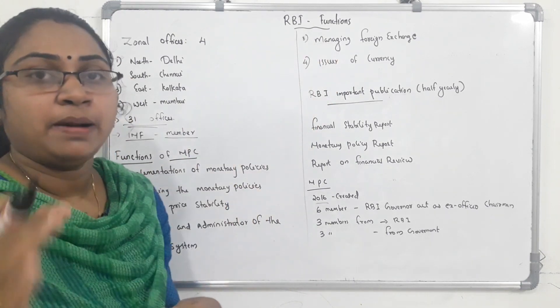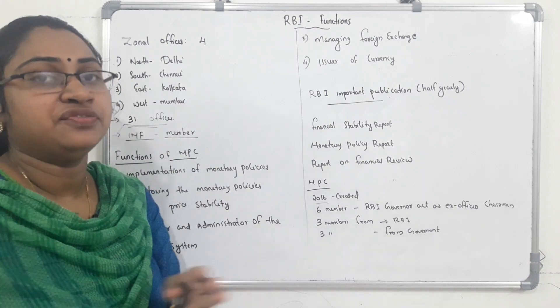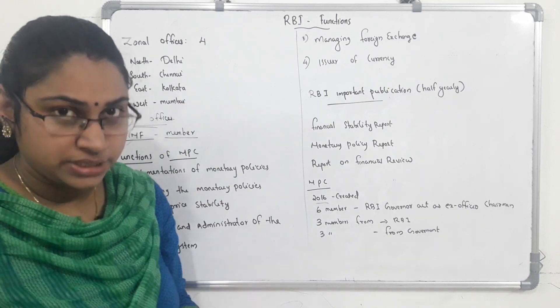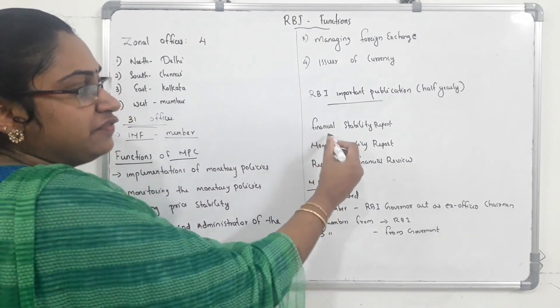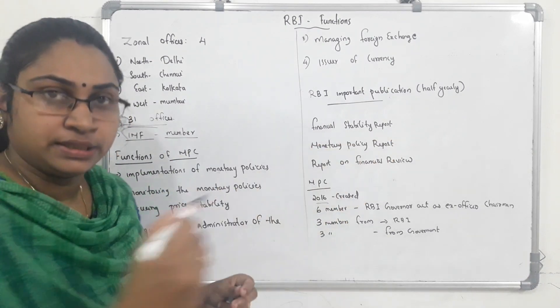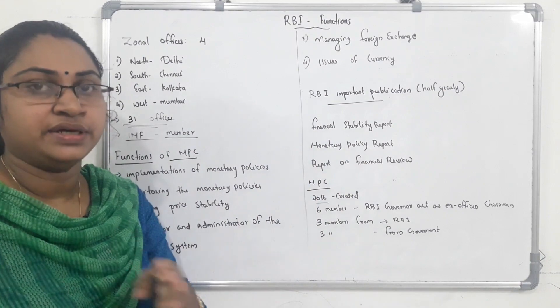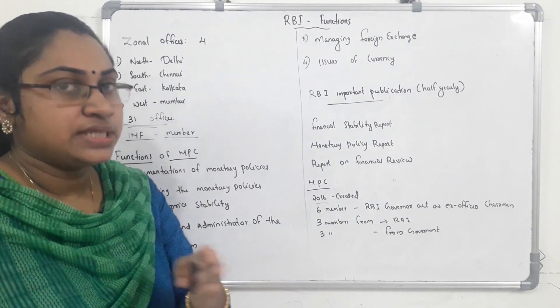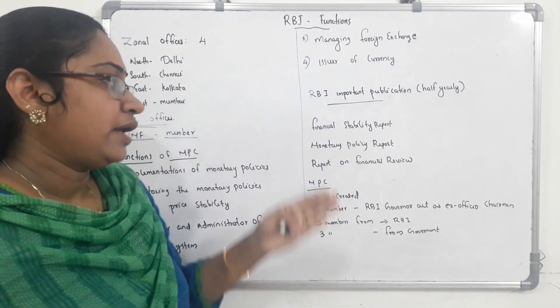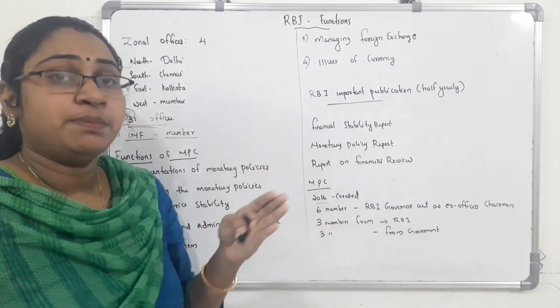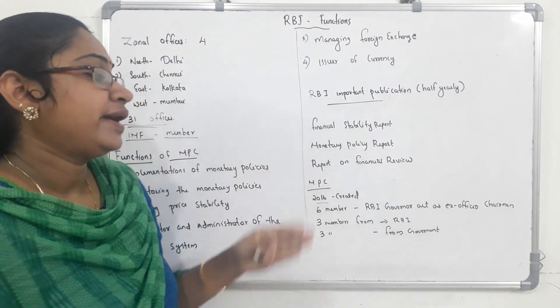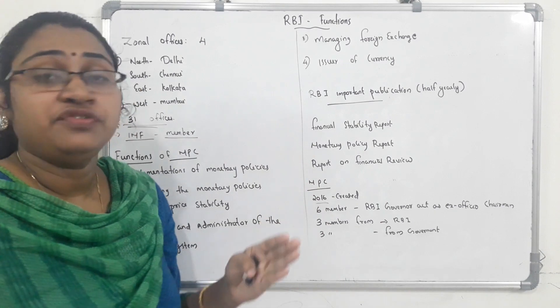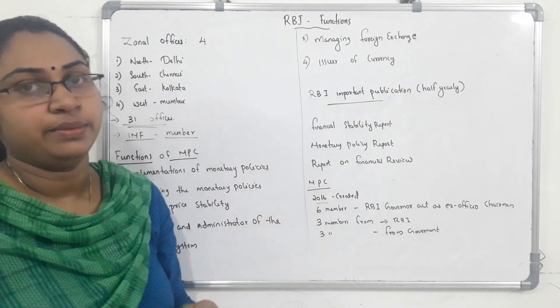The RBI has important publications. Half-yearly publications include the Financial Stability Report, the Monetary Policy Report, and the Report on Financial Review.